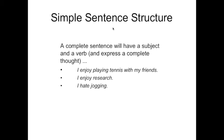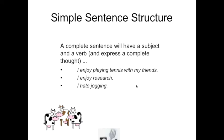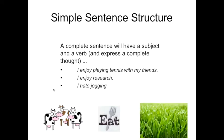Just to review, the basic, most simple sentence structure is as such: the sentence will have a subject and a verb, it expresses a complete thought, and very often sentences will also have an object. For example, subject 'I,' verb 'enjoy playing' — sometimes referred to as a predicate — object 'tennis with my friends.' This is a complete sentence. 'I enjoy research.' 'I hate jogging.' And thinking about 'cows eating grass,' here's our subject, our verb, our object, and they come in this order.